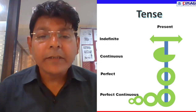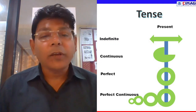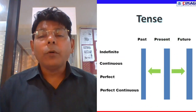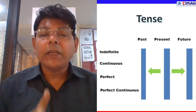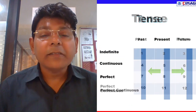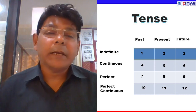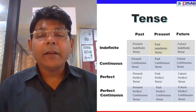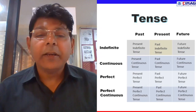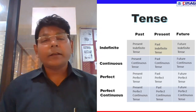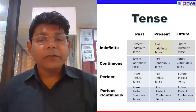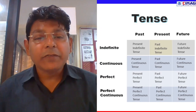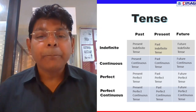तो किसी भी tense की बात करूं — present, past, या future — इन सबकी चार sub-categories होती हैं. तीन main categories और चार sub-categories, यानि altogether 12 तरीके की categories बनती हैं tense की. पहली category को हम present indefinite या simple present tense कहते हैं, दूसरी को past indefinite या simple past, और तीसरी को future indefinite या simple future tense के नाम से जानते हैं.